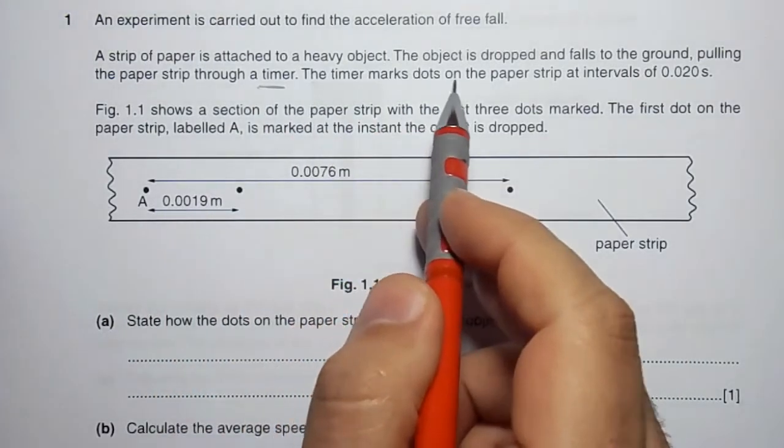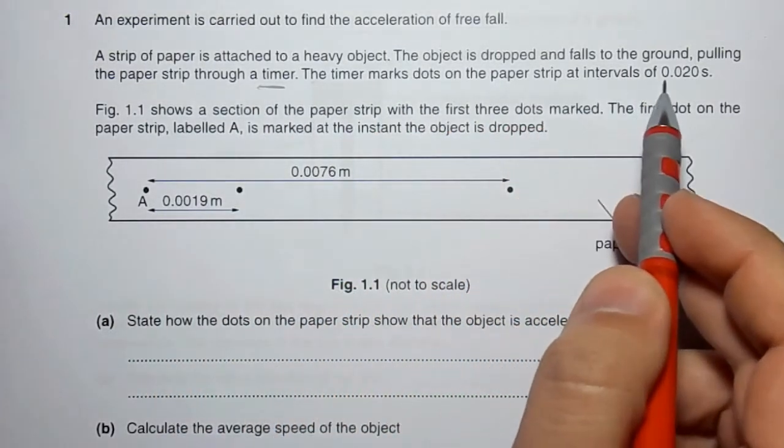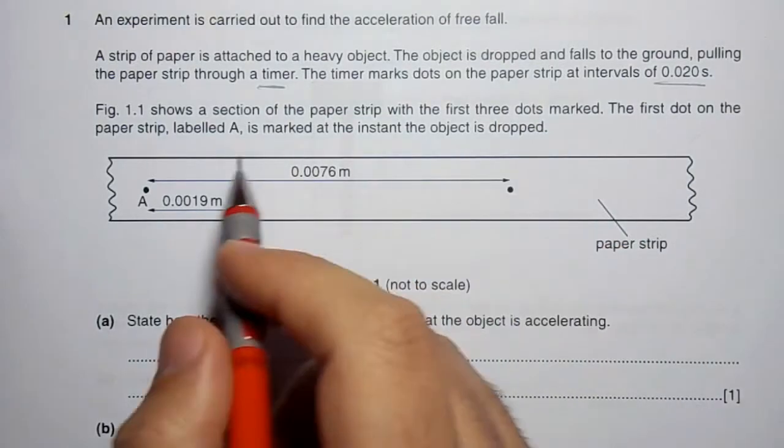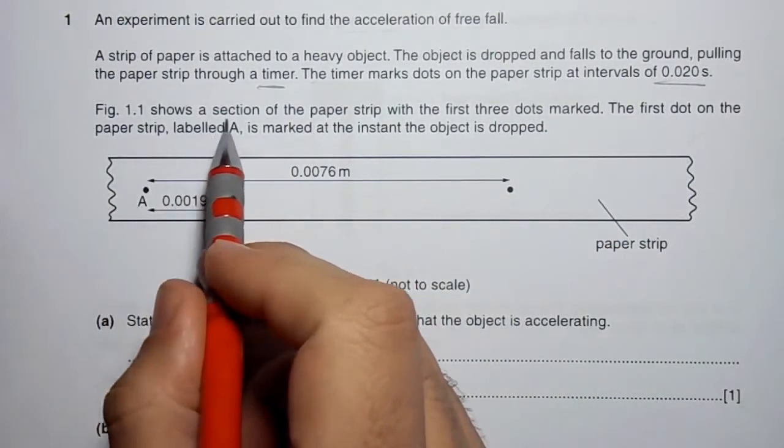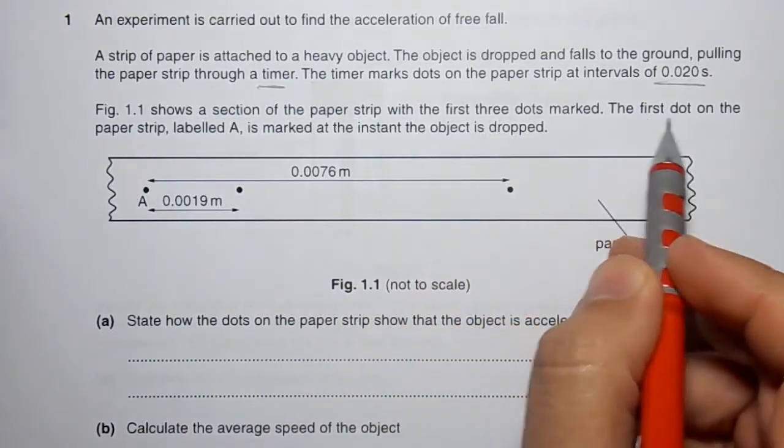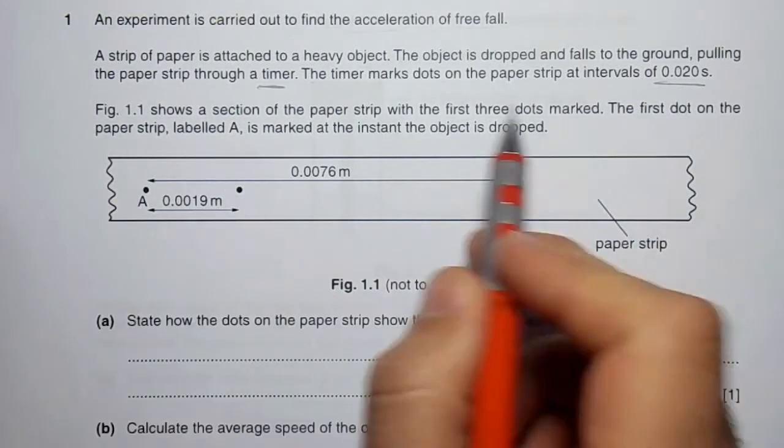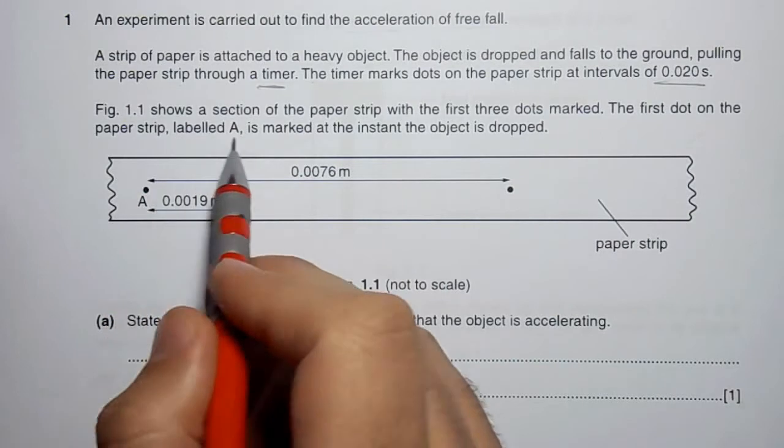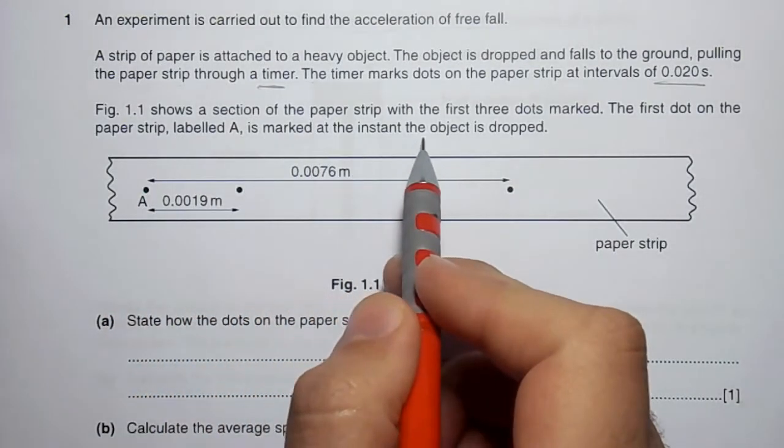through a timer. The timer marks dots on the paper strip at intervals of 0.020 seconds. Figure 1.1 shows a section of the paper strip with the first three dots marked. The first dot on the paper strip, labeled A, is marked at the instant the object is dropped.